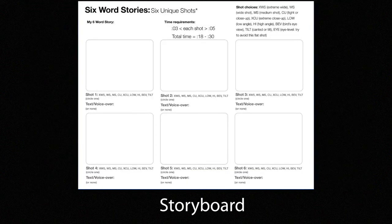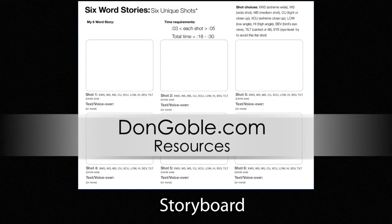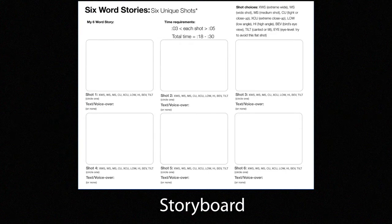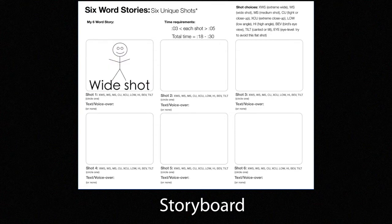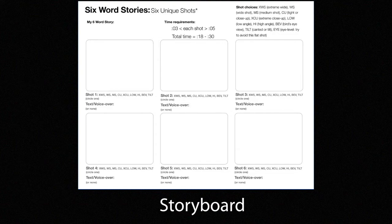The next phase that we get into will be storyboarding. Here's an example storyboard that is on my website, dongoble.com under resources. The square is your viewfinder — it's what you're looking through in your phone or whatever camera that you're using. And you want to draw out the picture as it is in your mind. So if it's going to be a smiling face, you would draw a big circle in that very first box of a smiling face, not the full stick figure of a person, because that would introduce a wide shot. You don't need to be an artist to fill out any kind of storyboard. Heck, I'm still a stick figure guy myself.